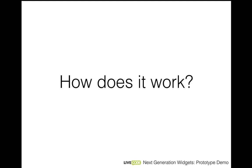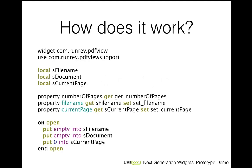What does this lower level version of LiveCode look like? Bear in mind that things may change a little bit over time, but I can show you some of how this PDF object has been implemented. This is us setting up the object, and you can see that I'm starting out by calling widget com.runrev.pdfview, which is defining the PDF view, and we're also asking it to use another file which contains some supporting code. Next, we define the properties that you will be able to get and set on this object: property number of pages links to get number of pages; property file name, with the ability to both get and set it; and the current page property, which you can also get and set. It's defined here which function calls get called whenever you do any of those things.